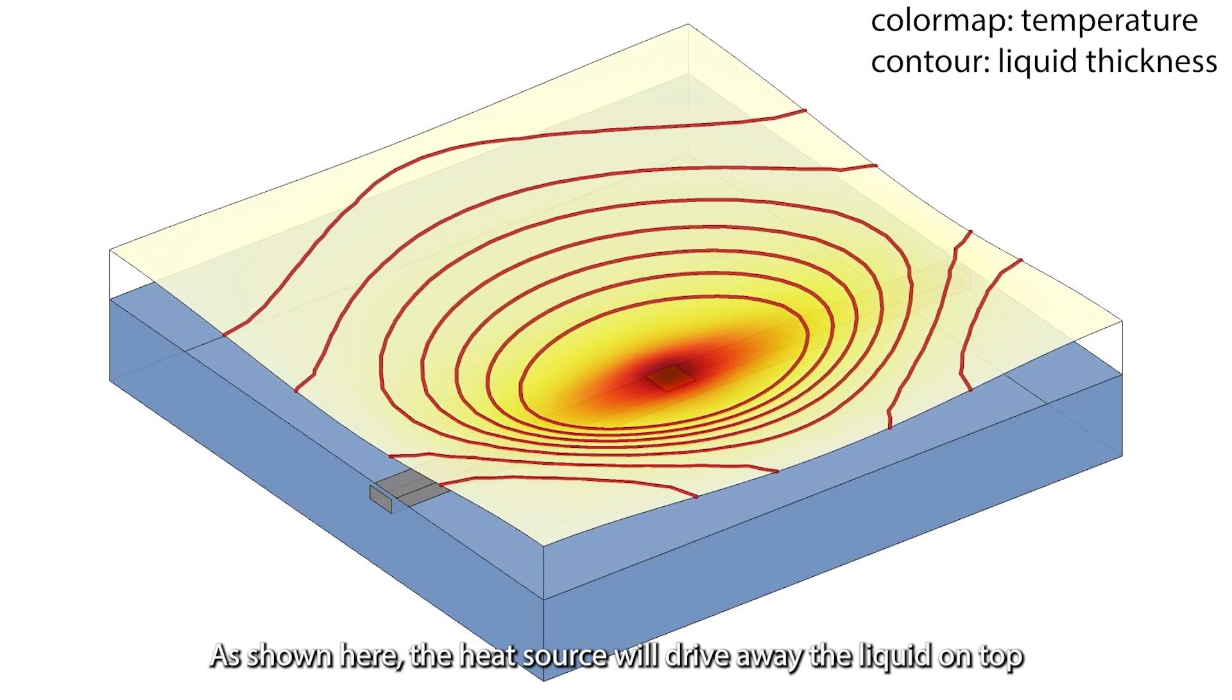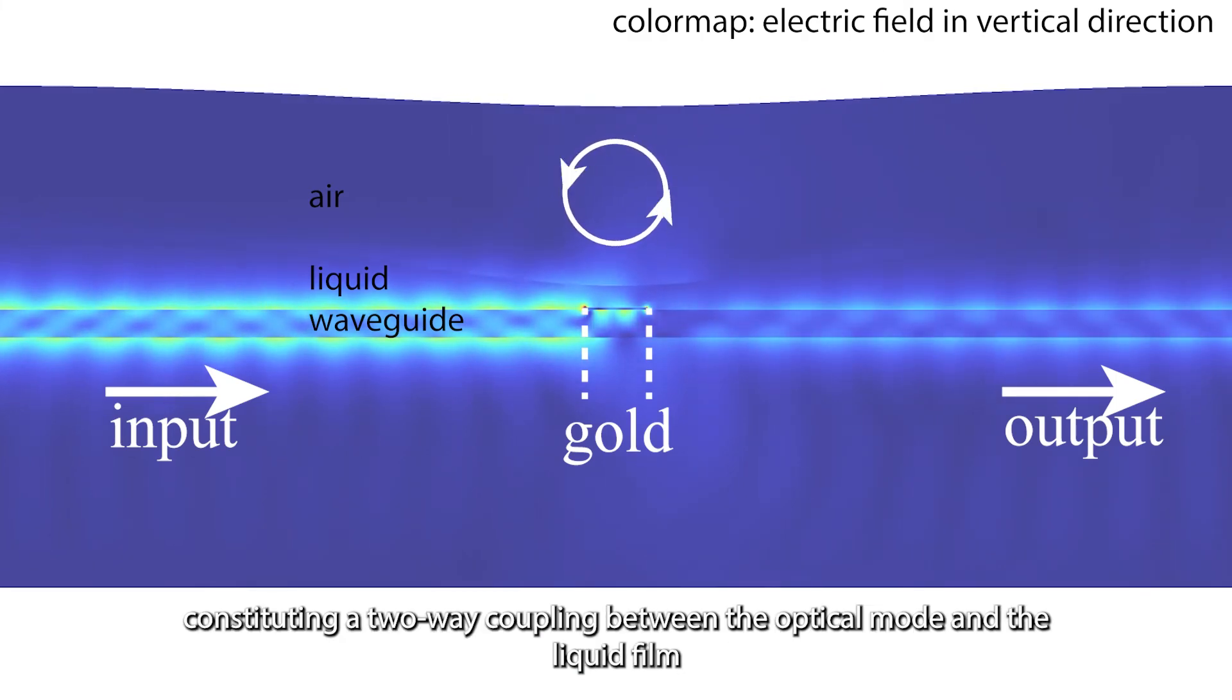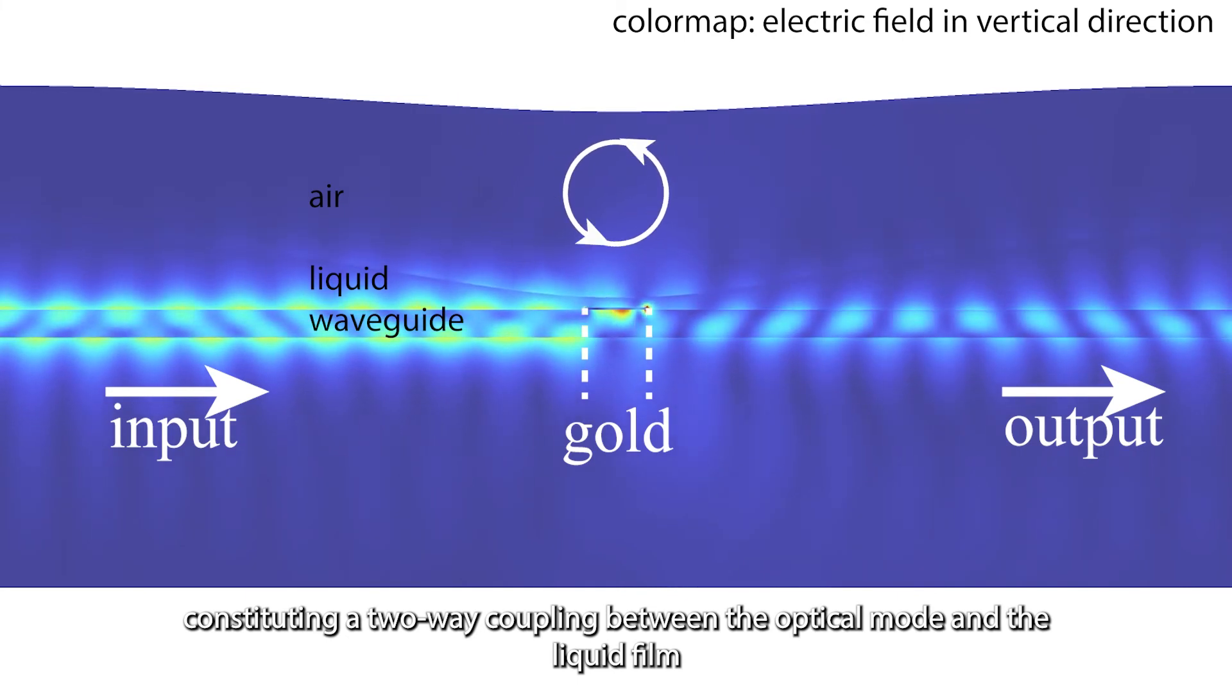As shown here, the heat source will drive away the liquid on top. The change of the liquid shape will in turn affect the properties of the optical mode in the waveguide, constituting a two-way coupling between the optical mode and the liquid film.